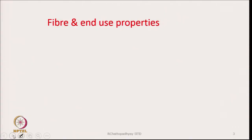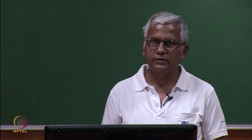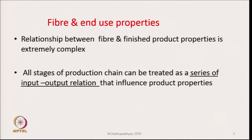First, let us see what the relationship is between fiber and end-use properties of a fabric. The relationship between fiber and finished product properties is extremely complex, because the fiber is converted into yarn, yarn is converted into fabric, and then the fabric may undergo certain chemical or mechanical processes.